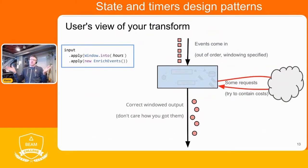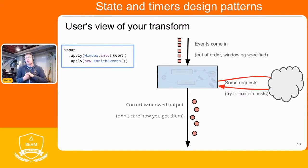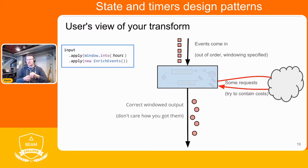Here's where windowing needs to interact well with state and timers. When you're writing Beam pipelines, users don't care about the fact that a transform uses state and timers. You want to build some abstraction. The important thing is it needs to work even if someone outside your transform changes how they're windowing their pipeline. The events come in out of order, they group them into hours, and your transform needs to work with the data and output correctly windowed results.